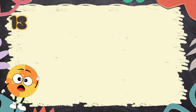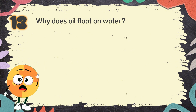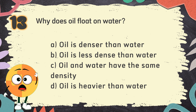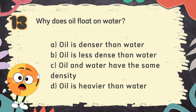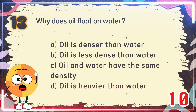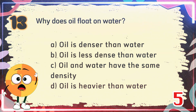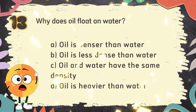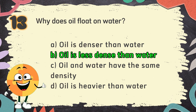Number 13. Why does oil float on water? The choices are: A. Oil is denser than water, B. Oil is less dense than water, C. Oil and water have the same density, D. Oil is heavier than water. The correct answer is B. Oil is less dense than water.